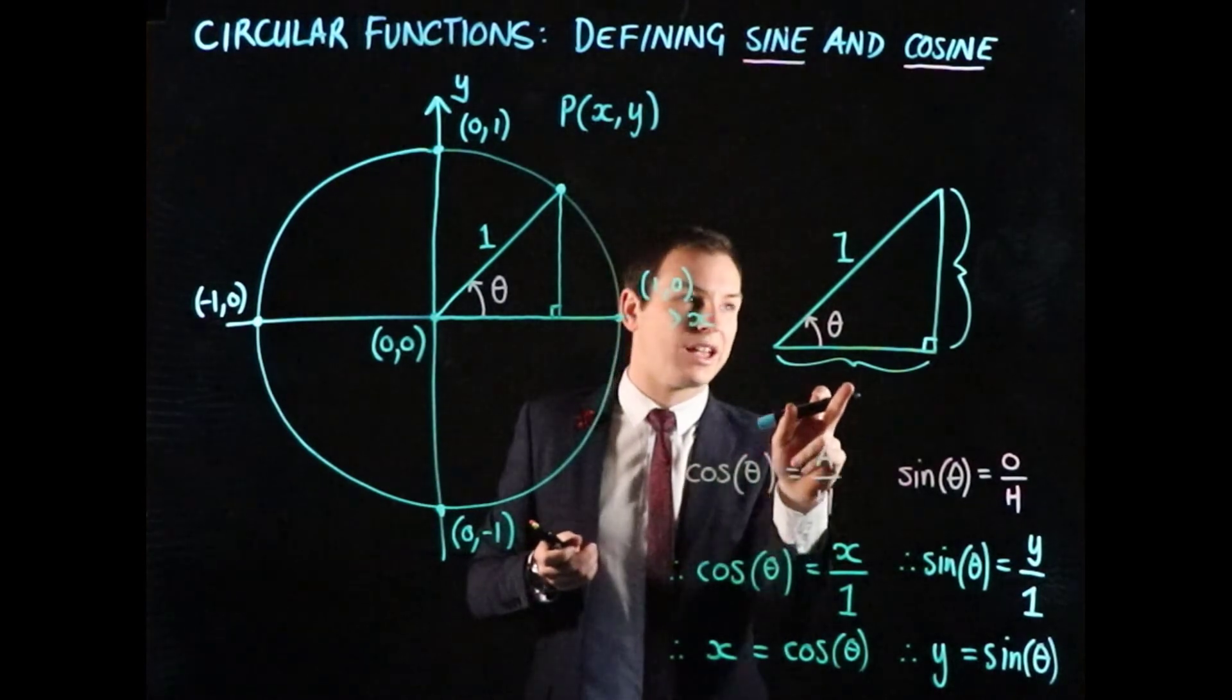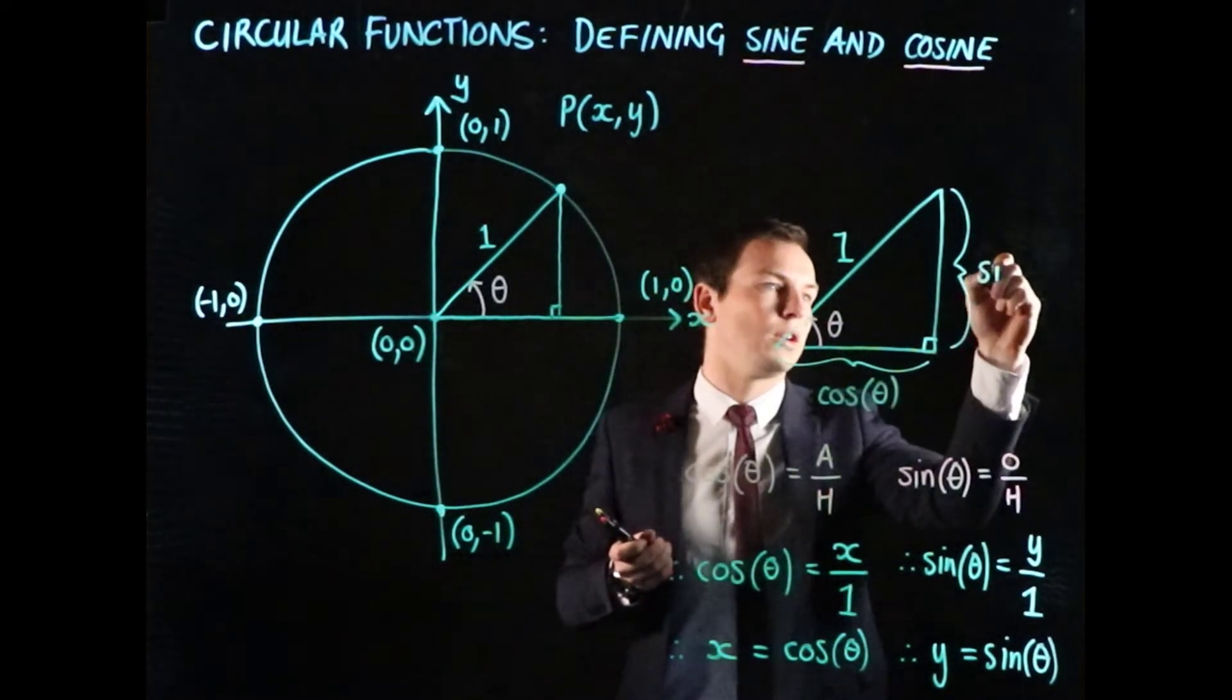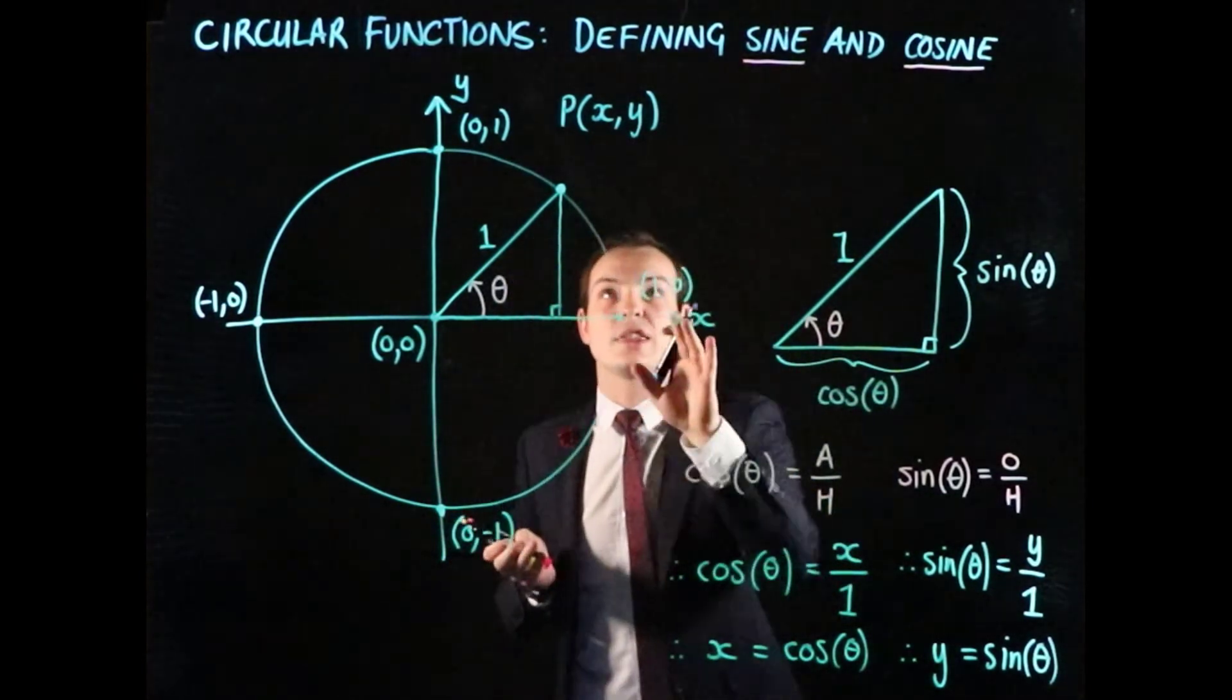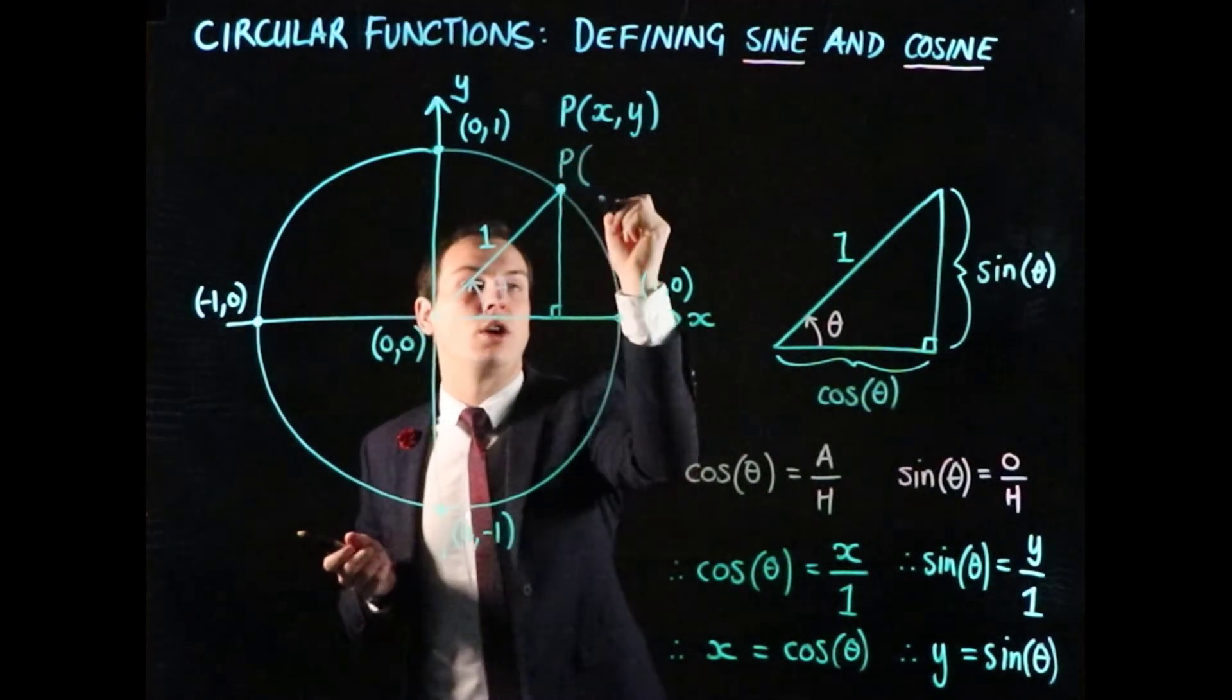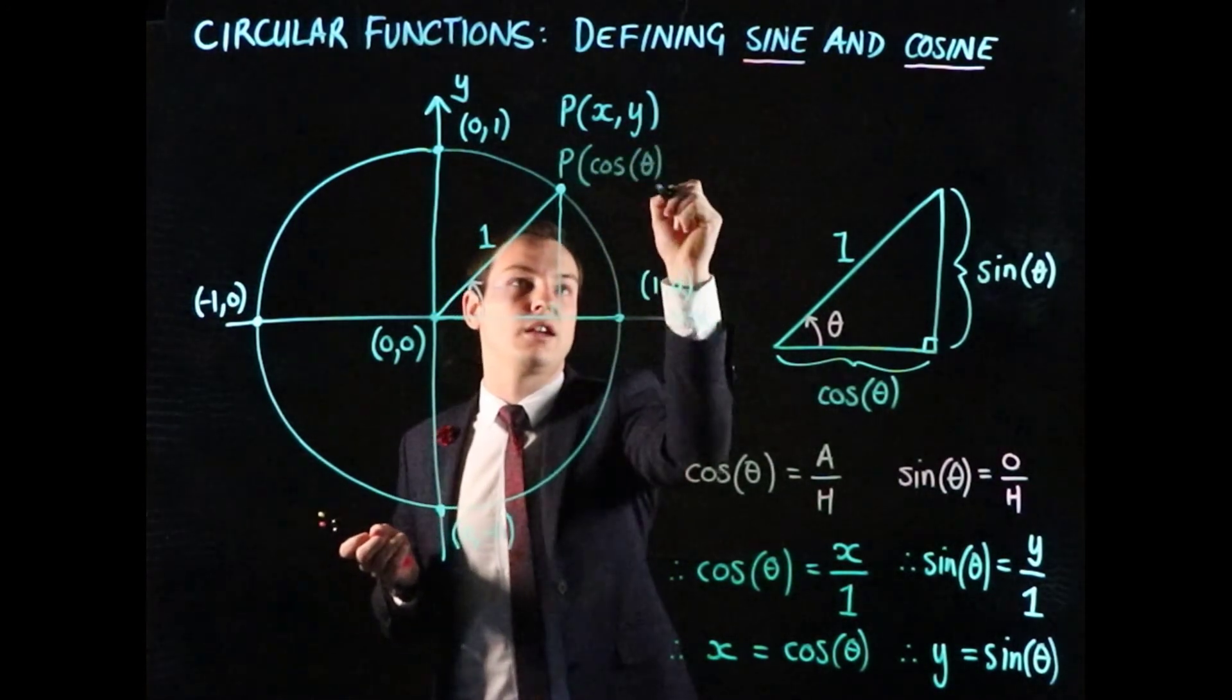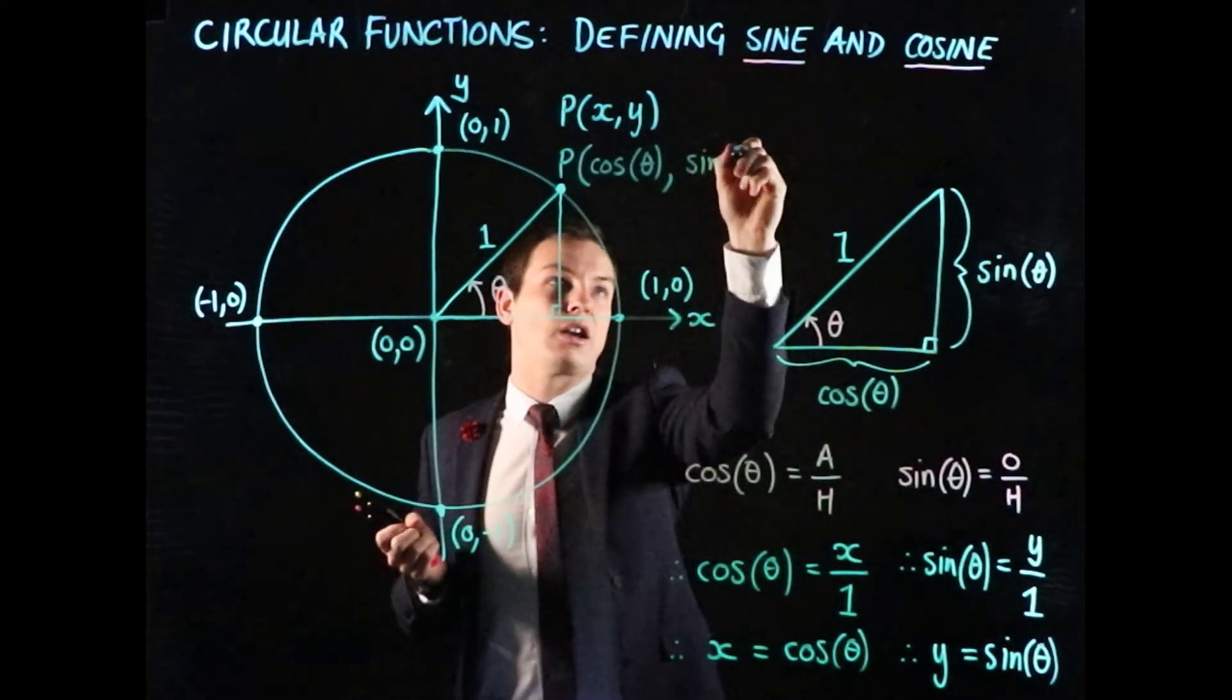So instead of having the x and the y that were just here, we now know that this is cosine of theta, and that this value is sine of theta. The last thing that we're going to do in this video is say that the point P of x, y actually captures what the cosine and sine values are. So x was cosine, so this is going to be cos of theta, comma, and the other part of this coordinate, the y value, is going to represent sine of theta.